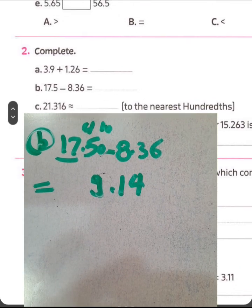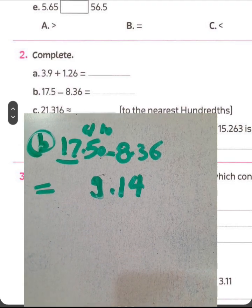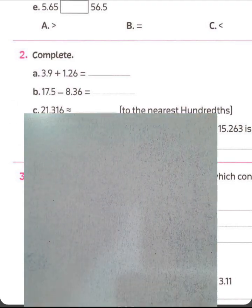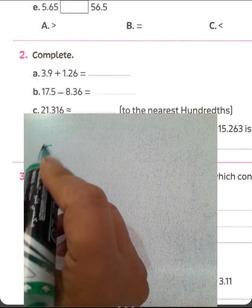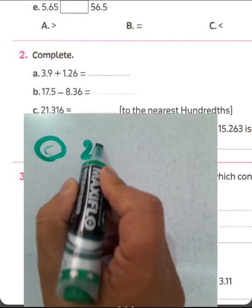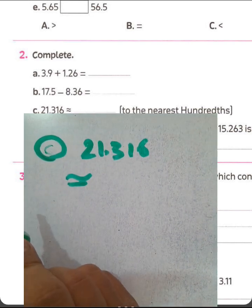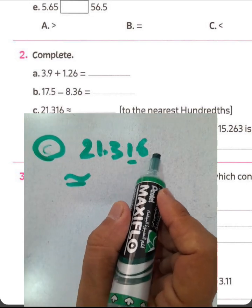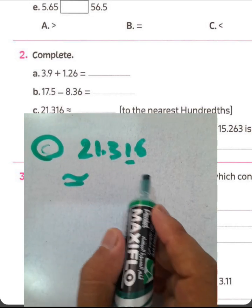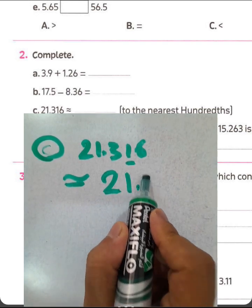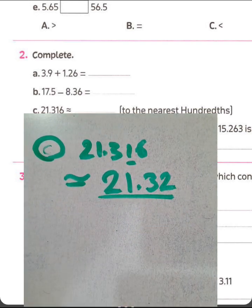Question letter C. Approximating to the nearest hundredths. 21.316. We can approximate this number to the nearest hundredths. Here, 1. 6 can give 1 to this number. It will be 2. Then the result will be 21.32.